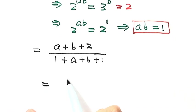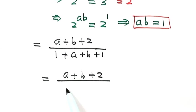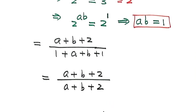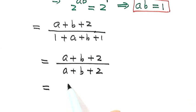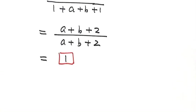Then simplify the bottom. This a plus b plus 2. Then top and bottom, they cancel out. Then the answer is just 1. So 1 is the answer for this question. Thanks for watching.